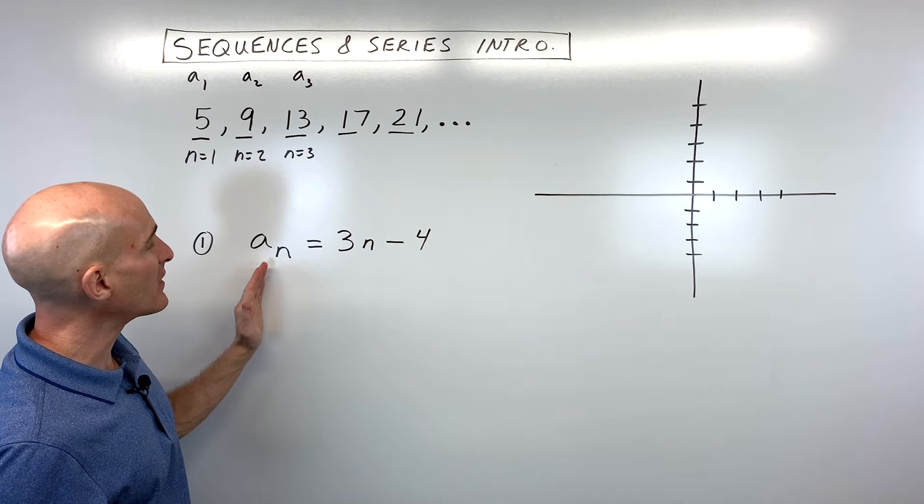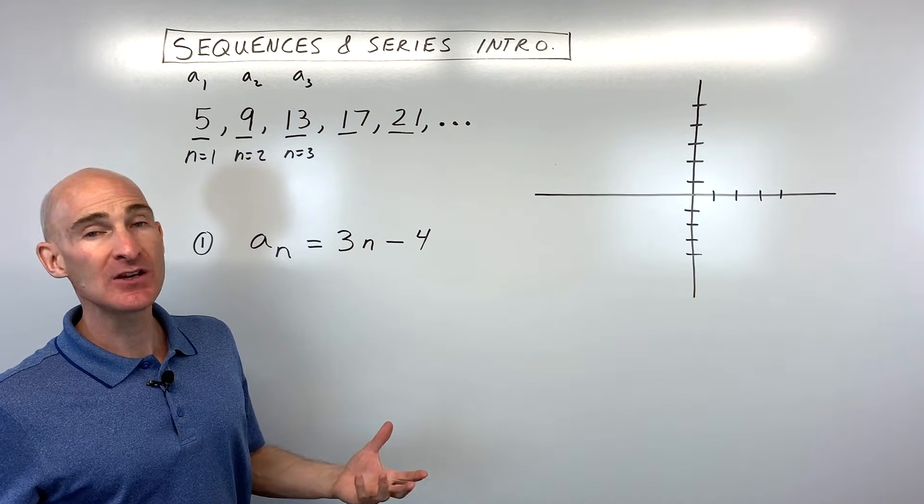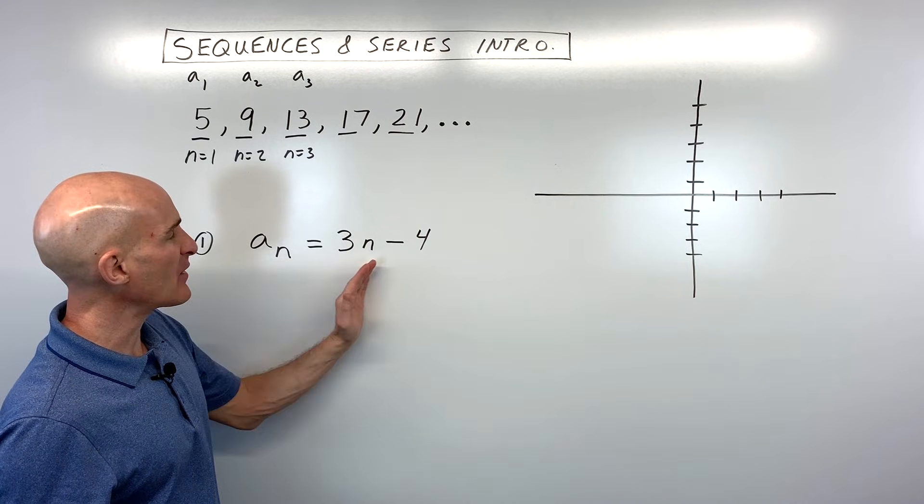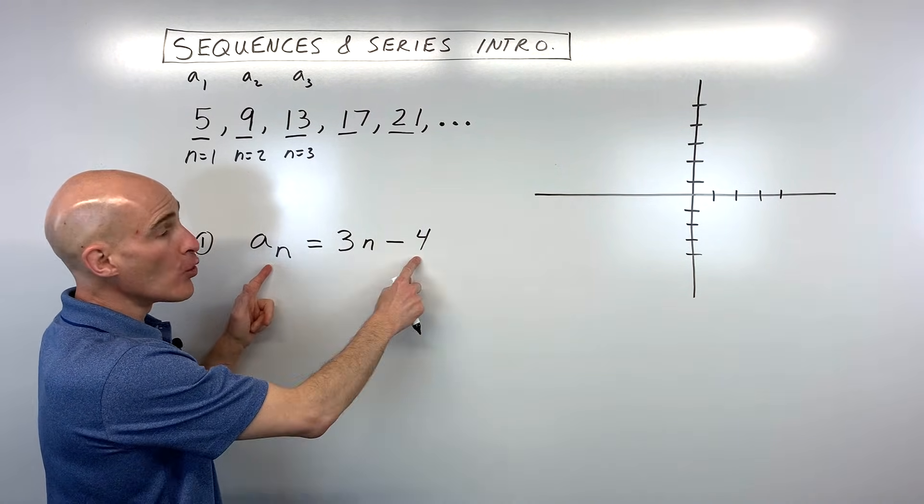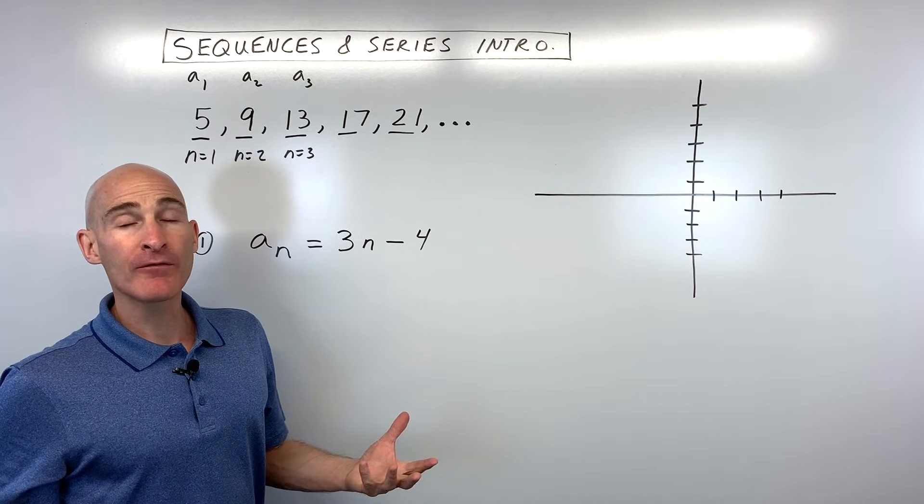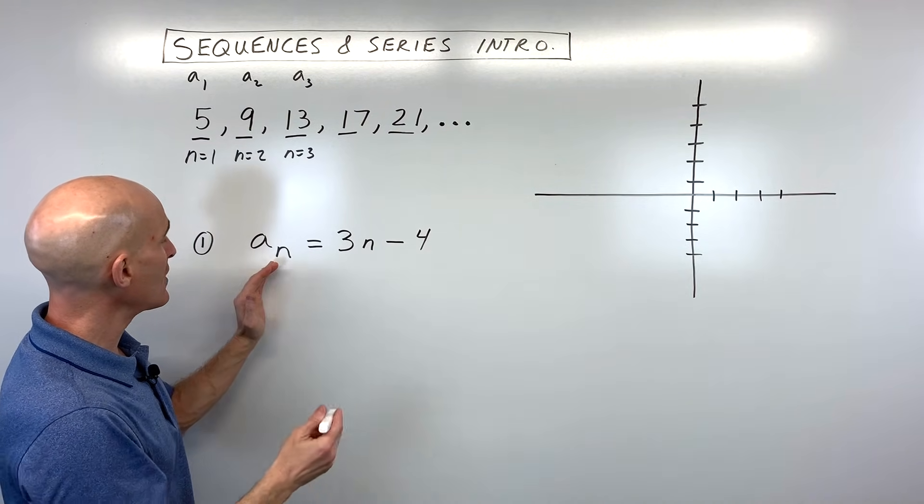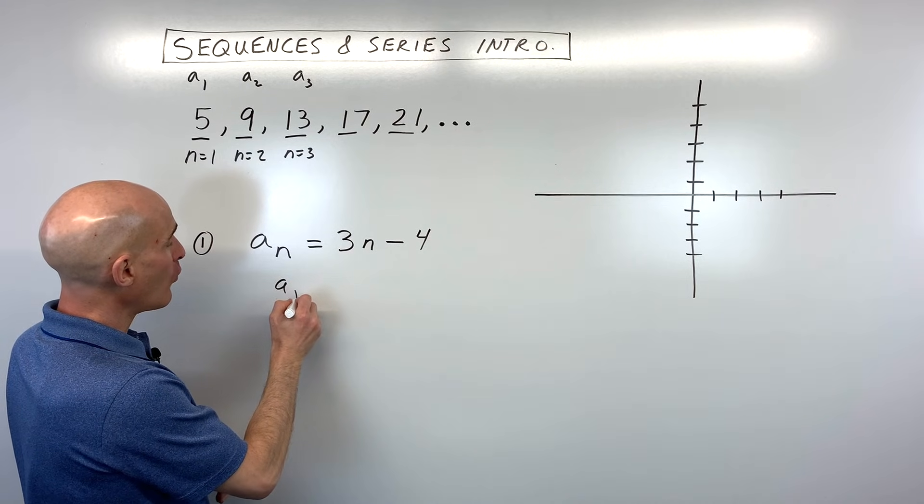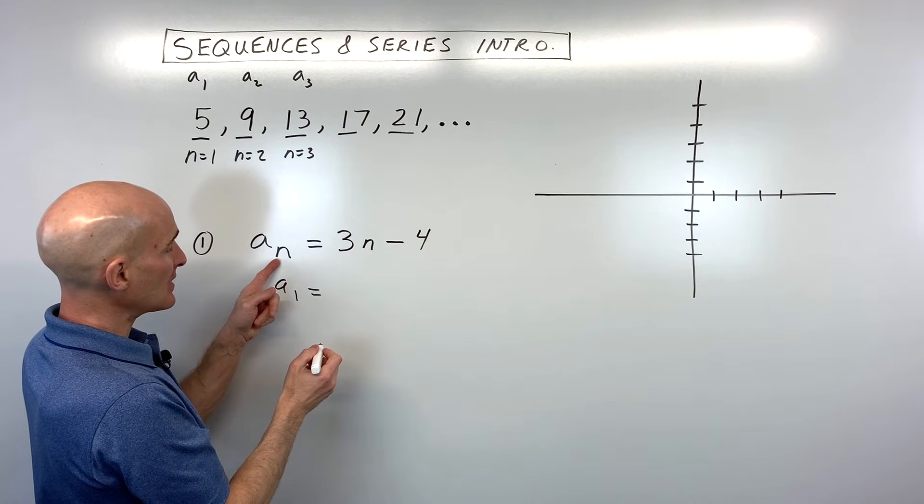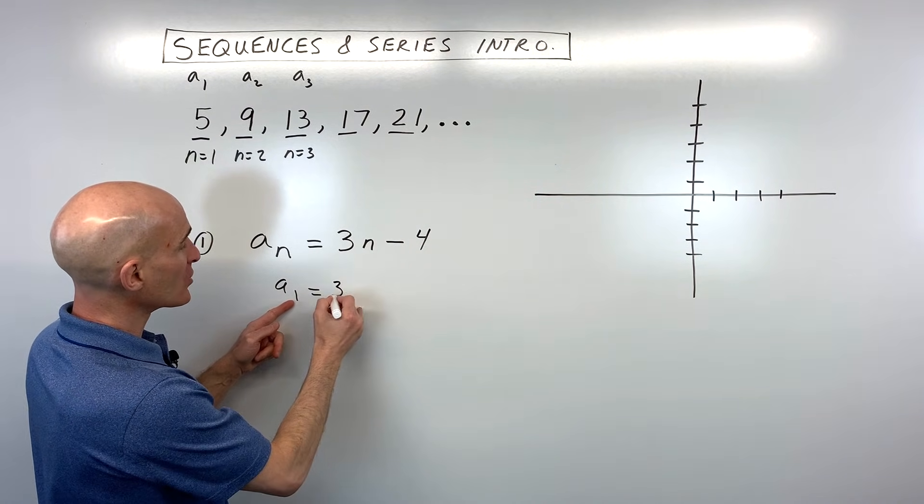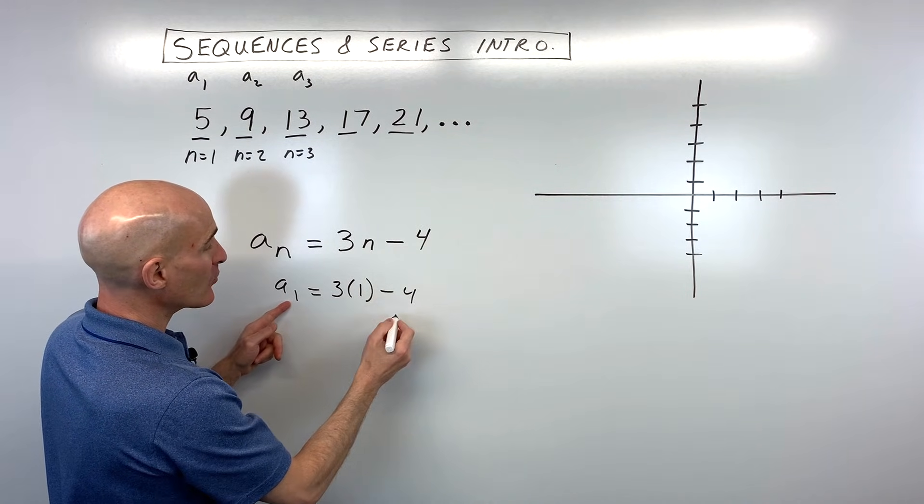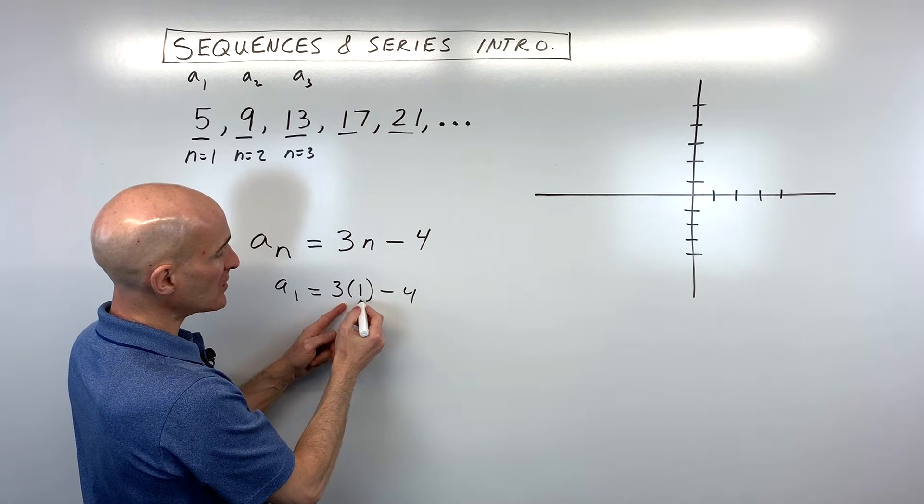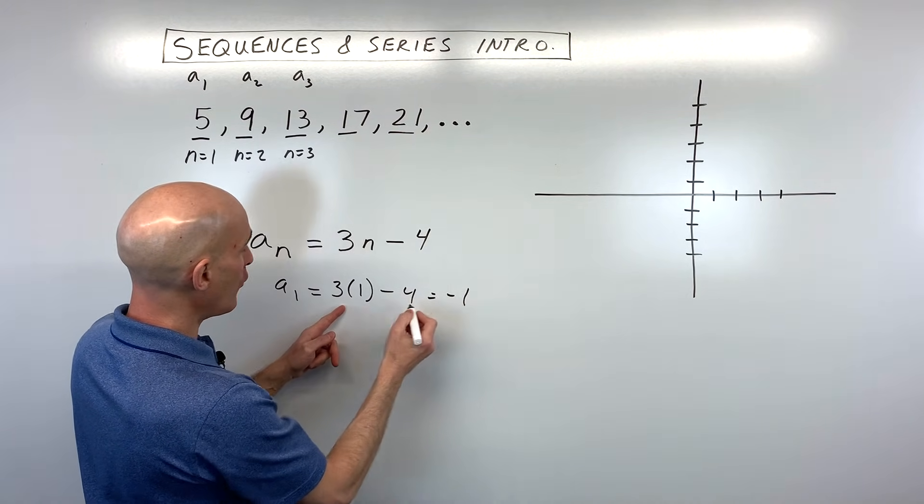Now, let's say we wanted to find a set of terms in a sequence and we say, well, let's just maybe find the first five terms. Well, what we're given here is we're given a rule or a formula in order for us to find those terms. So here we have a sub 1, that means n equals 1. That's the first term. So what we're going to do is wherever we see n, we're going to put 1 in place of n. And then we're going to multiply by 3 and subtract 4. So 3 times 1 is 3, minus 4 equals negative 1.